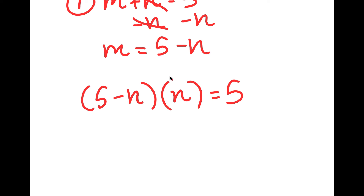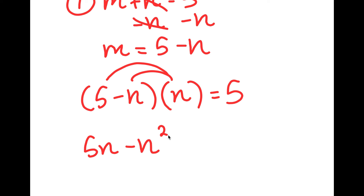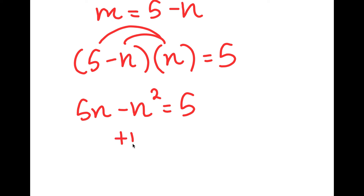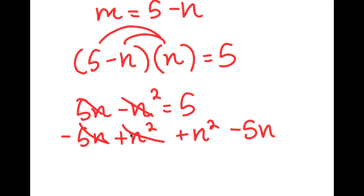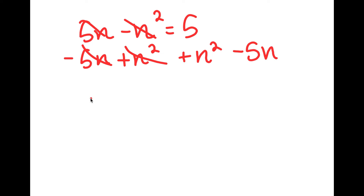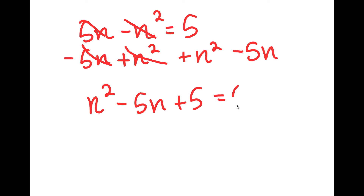Now I can distribute the n. So, 5 times n is going to be 5n, and negative n times n is going to be negative n squared. So I have this equal to 5, and now I can add n squared on both sides and subtract 5n on both sides. I get n squared minus 5n plus 5 is equal to 0.